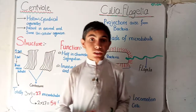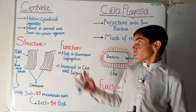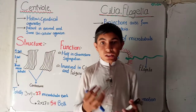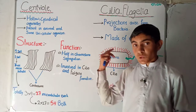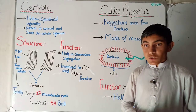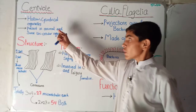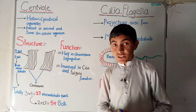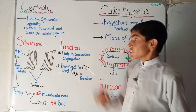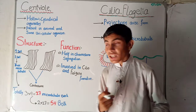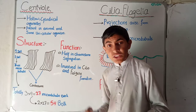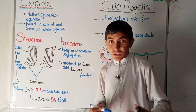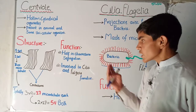Assalamu alaikum, welcome back to another biology lecture. Today we are talking about the centriole, cilia, and flagella. This is the last lecture of cell biology. Centrioles are hollow cylindrical organelles present inside animal cells and some unicellular organisms, but they are not present inside plant cells.